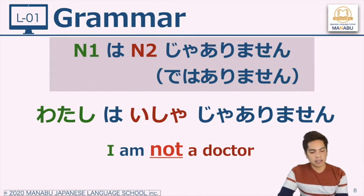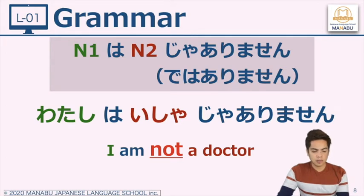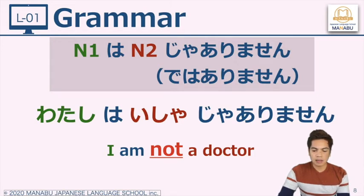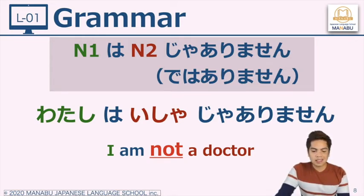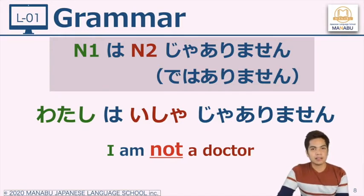We will describe again myself — watashi. Watashi followed by the particle wa indicates this sentence is about watashi. Then Noun 2 ja arimasen: isha ja arimasen. So if we translate this one by one: I — isha ja arimasen — am not a doctor. Next example: we will describe Mr. Van. Van is not a Japanese name, so we will write his name using katakana characters and attach san. Van-san wa gakusei ja arimasen — Mr. Van is not a student.